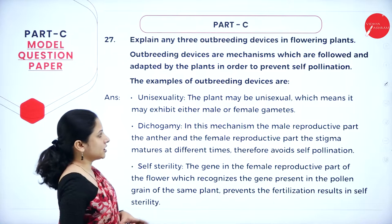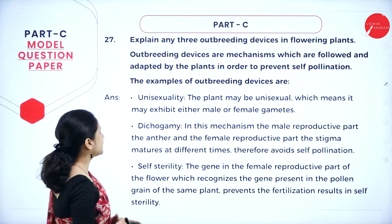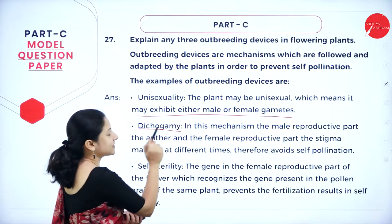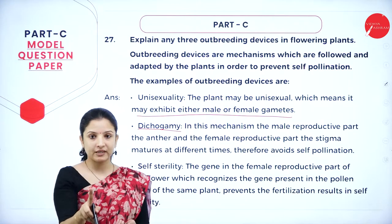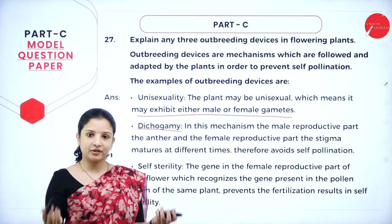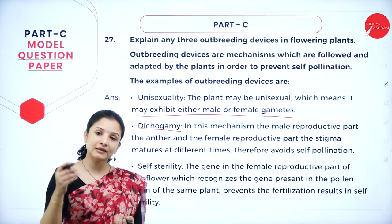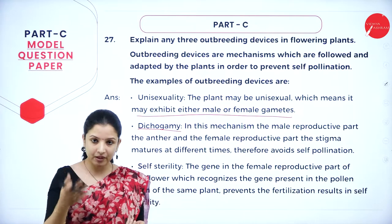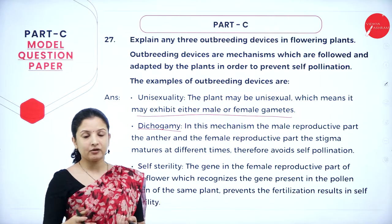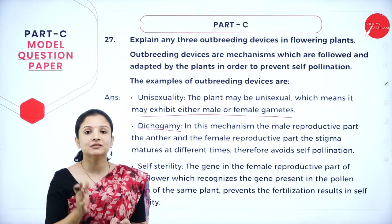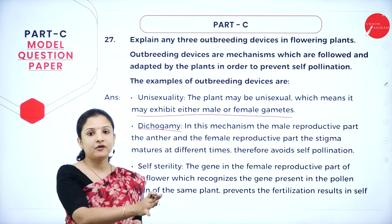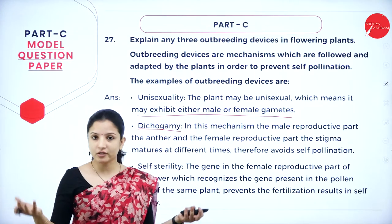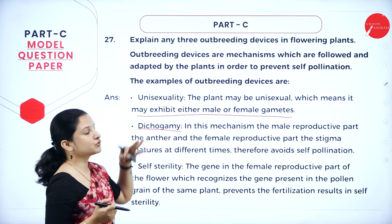The first outbreeding device is unisexuality — the plant may be unisexual, meaning it exhibits either male or female gametes. This prevents self-pollination because in bisexual flowers, both male and female reproductive parts are in the same flower, increasing chances of self-pollination. By choosing unisexual plants, one flower has the male organ and another has the female organ, so chances of self-pollination are eliminated.